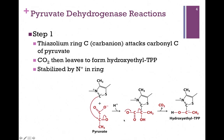A carboxyl group makes a very good leaving group, and that's where pyruvate gets decarboxylated. The form is now a hydroxyethyl group attached to TPP. Notice the negative charge on the product of this step — that's stabilized by the positive nitrogen atom in the ring of the thiazolium cofactor. So the goal of enzyme 1, its function, is to decarboxylate pyruvate.